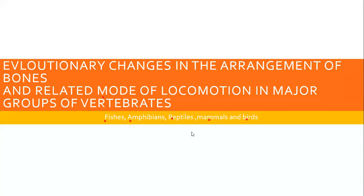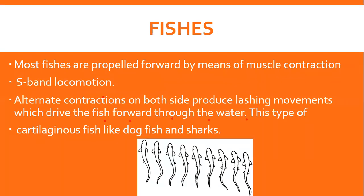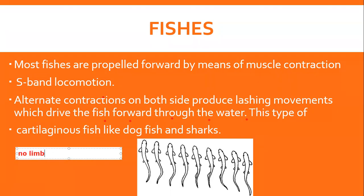پہلے fishes کی بات کرتے ہیں۔ Fishes کے skeleton میں کہیں پر limbs موجود نہیں ہیں — no limbs، no legs۔ جب fish locomote کرتی ہے تو اس کی locomotion S-band ہوتی ہے، یعنی fish تیرتے وقت اپنی body کو right اور پھر left، alternatively دائیں بائیں لہراتی ہے۔ اسی کو lashing movement کا نام دیتے ہیں۔